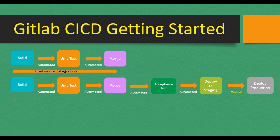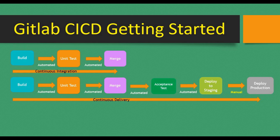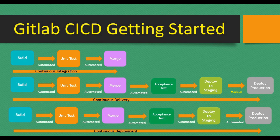For Continuous Delivery, after the CI phase there is an automated acceptance test, and the application is deployed to a staging area. The difference is that the automated process stops at staging — deployment to production is a manual step requiring confirmation. With Continuous Deployment, the whole process is automated: as soon as you make changes, the new version is automatically deployed to production.